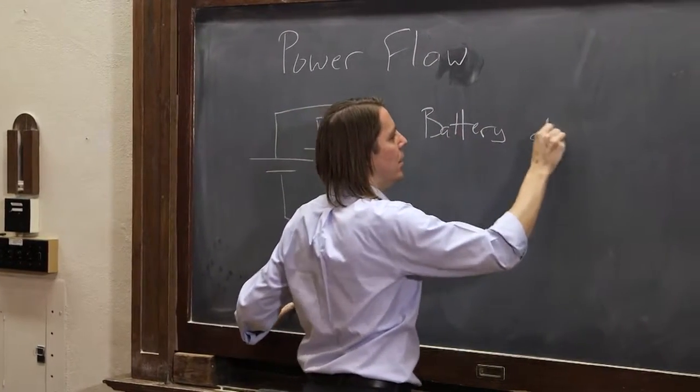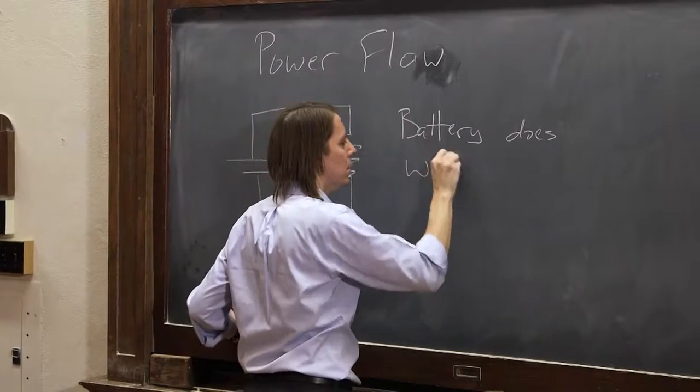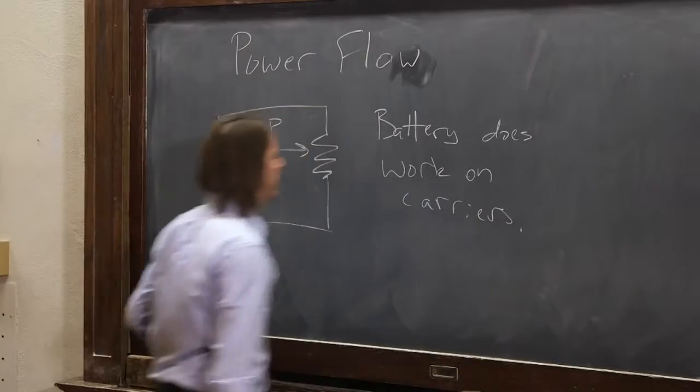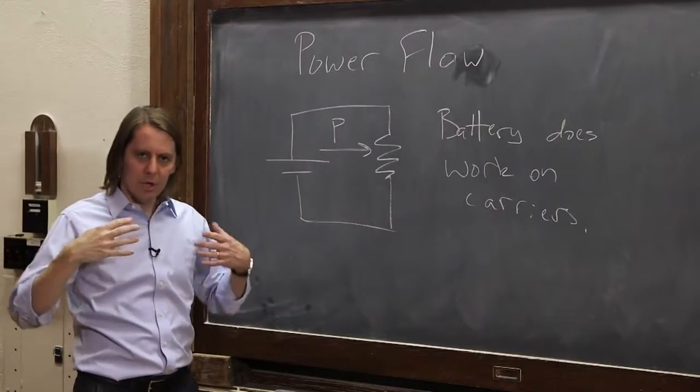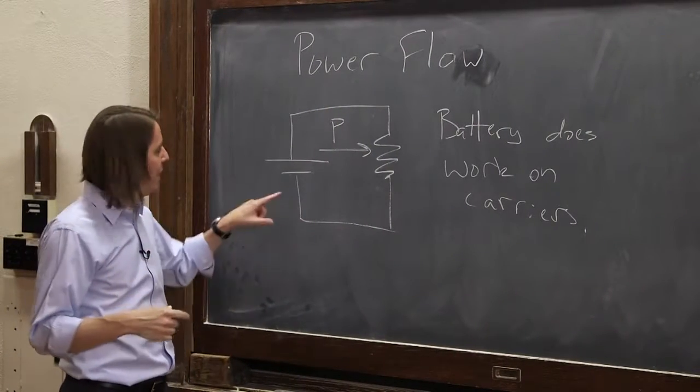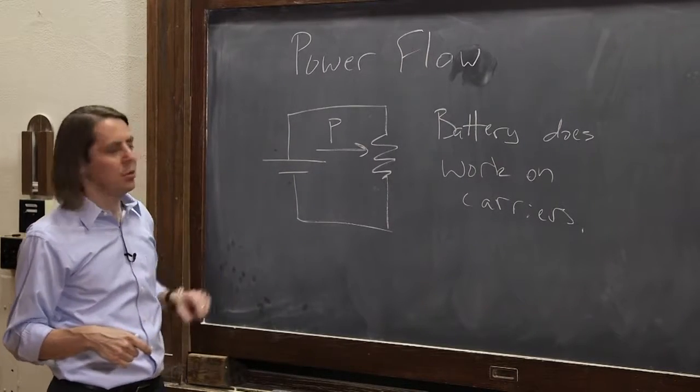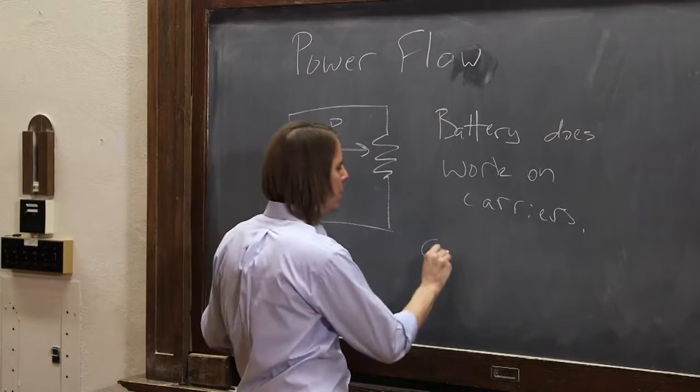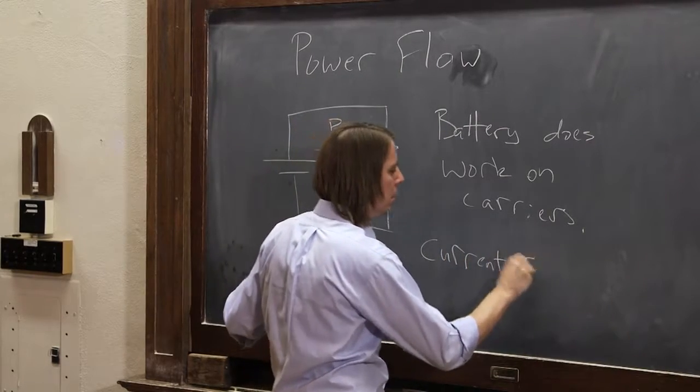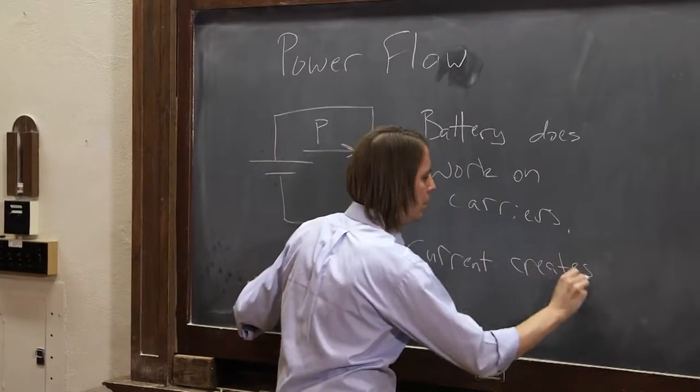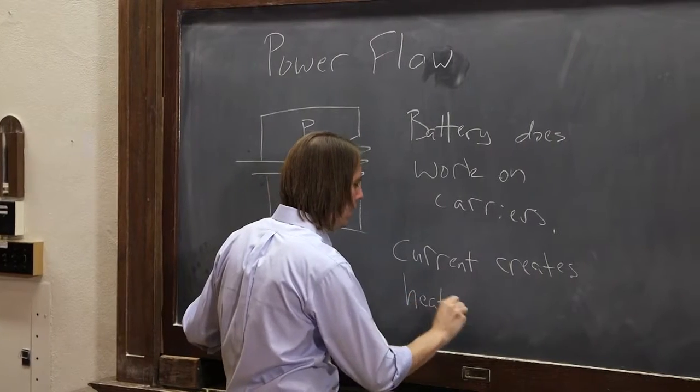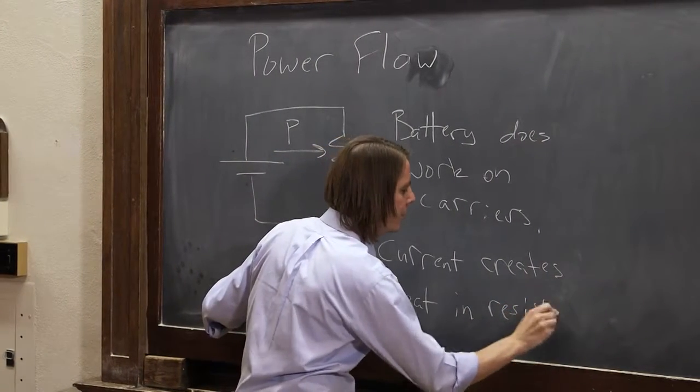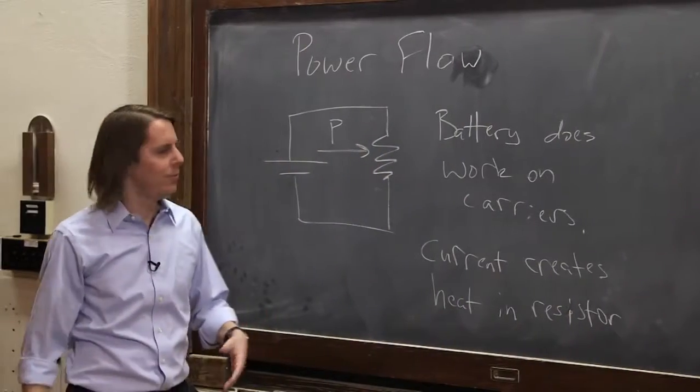So let's think a little bit about what each element is doing. The battery does work on the carriers. It's doing a certain amount of work per unit time by bringing the carriers from zero potential to a higher potential. And then the current creates heat in the resistor.